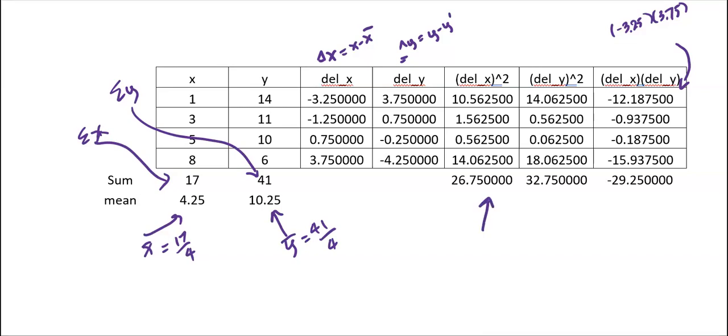The number 26.75 is the summation of delta x squared. 32.75 is the summation of delta y squared. Negative 29.25 is the summation of the product of delta x and delta y.